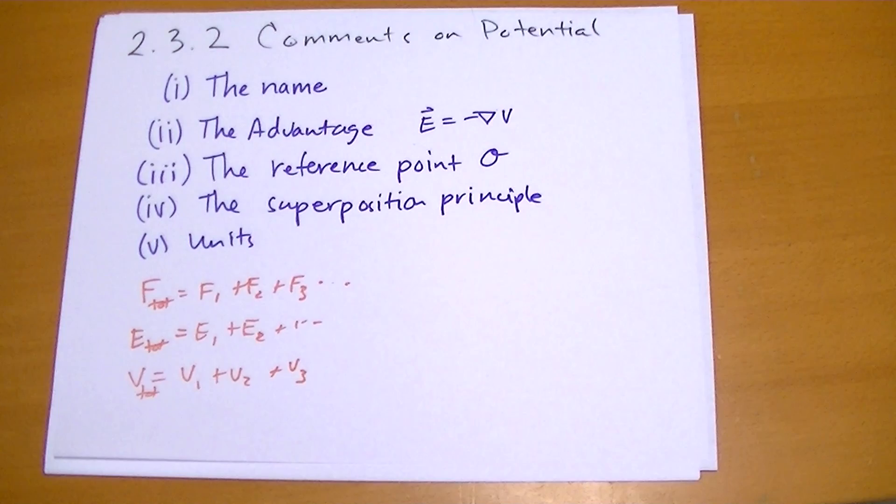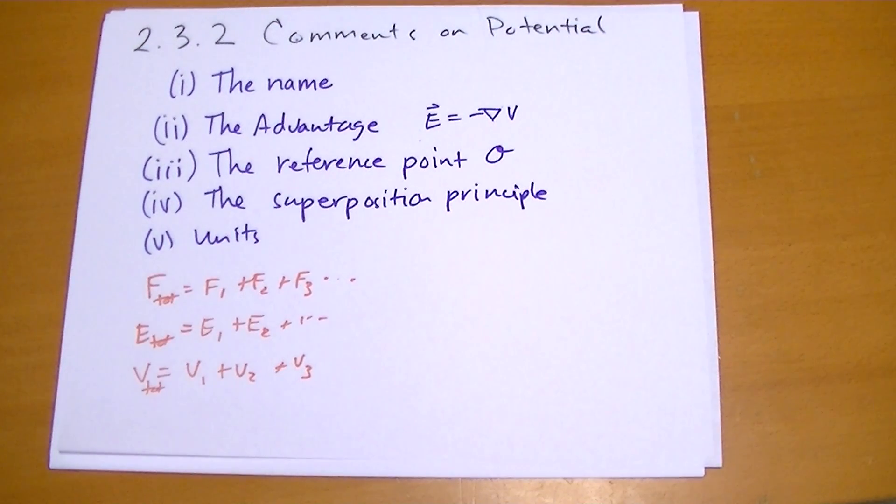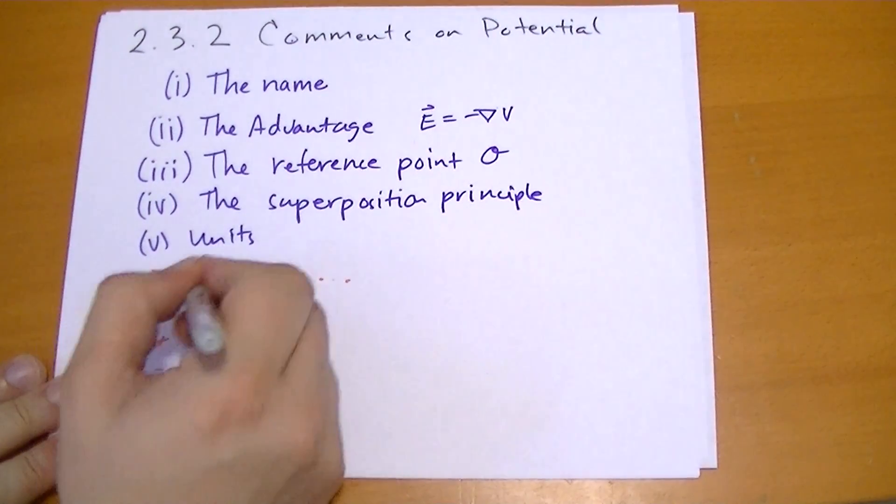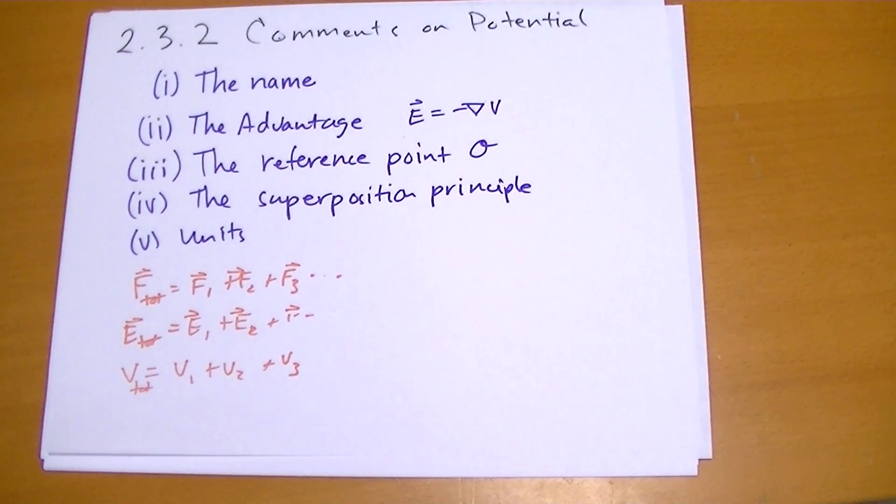This principle of superposition makes a lot of problems easier to solve. The other thing is it's a regular sum. These are actually vectors, so you have to add three numbers in order to get these to work. But the electric potential is a single number. It's a lot easier to add a single number than vector potentials.